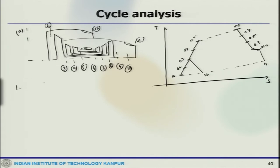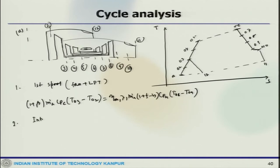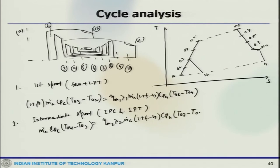If we do the analysis, first the energy of the first spool—fan plus LPT—gives: (1+beta)*M_dot_A*Cp_c*(T03-T02) = eta_M1 * lambda_1 * M_dot_A * (1+F-B) * Cp_H * (T08-T09), if there is a bleed. Second is the intermediate spool, which is IPC and IPT. Then we can write: M_dot_A * Cp_c * (T04-T03) = eta_M2 * lambda_2 * M_dot_A * (F-B) * Cp_H * (T07-T08).